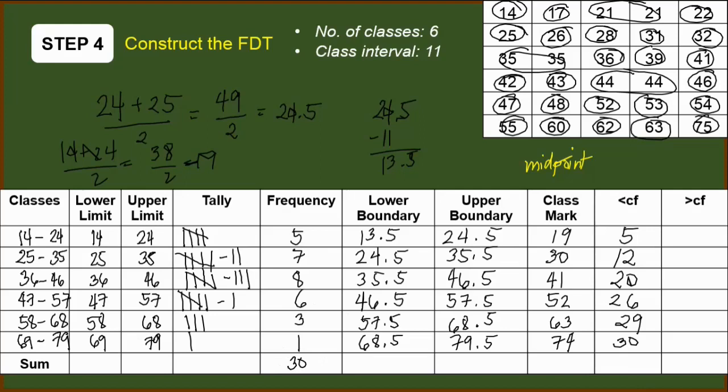Next, for the greater than cumulative frequency, it counts how many data sets or what is the frequency given the condition that the data should be greater than the lower limit of that class. Meaning, for this class, how many data are greater than 14? Obviously, all of them are greater than 14. So for the first entry, we have 30.